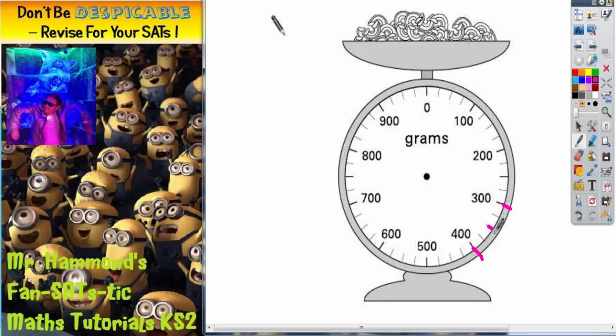So halfway between 300 and 400 would have to be there, and that would be 350 grams. And then you would just draw your arrow up to that point there, and that's your answer.